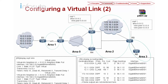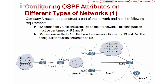After the virtual link, let's look at the different types of networks. The requirement here shows that R2 must permanently function as a DR on the FR network, and the configuration must be performed on R3 and R4. R5 must function as a DR on the broadcast network formed by R3 and R4, and the configuration must be performed on R5. To select the DR and BDR, we need to change the DR priority.